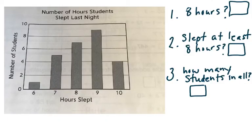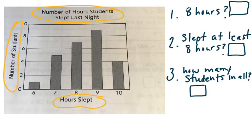Go ahead and erase your whiteboard and number one, two, and three. Here you're going to see a bar graph. Up at the top, we have the number of hours students slept last night. And this is maybe information from one particular fourth grade class. On the side, we have the number of students. And then on the bottom, the hours slept.